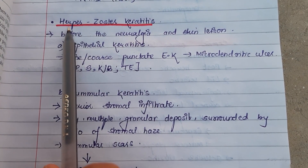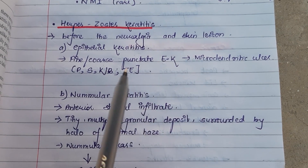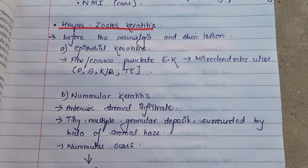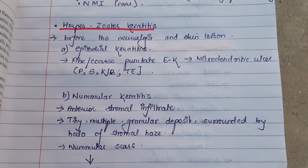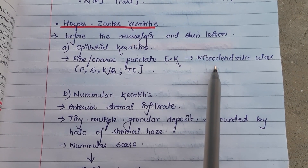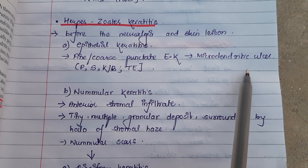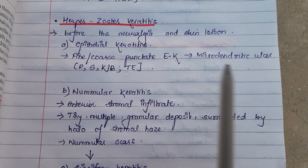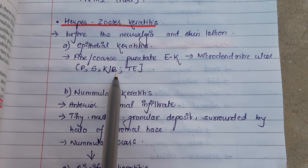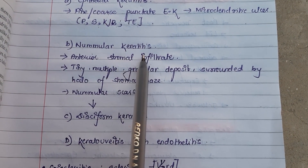Corneal involvement occurs in the form of herpes zoster keratitis. These lesions may appear before the neuralgia and skin lesions, and can occur in different forms: epithelial keratitis, nummular keratitis, disciform keratitis, and keratouveitis with endothelitis. In epithelial keratitis, there is first fine or coarse punctate epithelial keratitis, which progresses to form a micro-dendritic ulcer. This micro-dendritic ulcer differs from the dendritic ulcer in herpes simplex infection — it is located at the corneal periphery, is stellate-shaped, lacks a terminal bulb or knob, and has tapered ends.